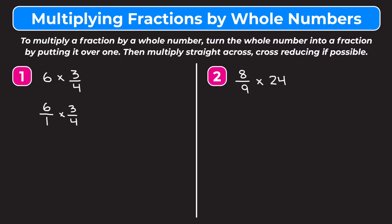Now we're going to multiply like normal fractions. First we check if we can simplify or cross reduce. We can cross reduce the six and the four by dividing them both by two: six divided by two is three, and four divided by two is two. Multiplying straight across: three times three gives nine as the numerator, and one times two gives two as the denominator.